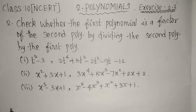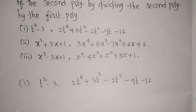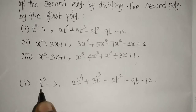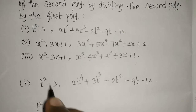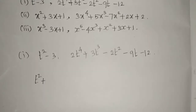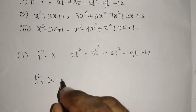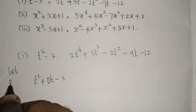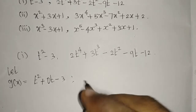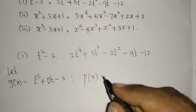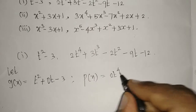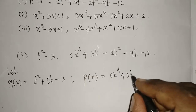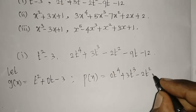Now I will start the first question. We write the first polynomial in order. The first term is t², next we need t but there is no t, so I write it as 0t, then minus 3 as the constant. Let this be g(x). The second polynomial p(x) has degree 4: 2t⁴, then 3t³, then minus 2t², minus 9t, minus 12.